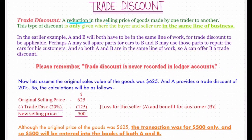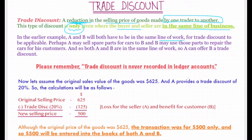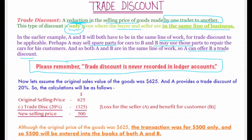A trade discount is a reduction in the selling price of goods made by one trader to another. This type of discount is only given where the buyer and seller are in the same line of business. In the earlier example, A and B would both have to be in the same line of work. Perhaps A may sell spare parts for cars to B, and B may use the spare parts to repair cars for his customers, so A can offer B a trade discount.